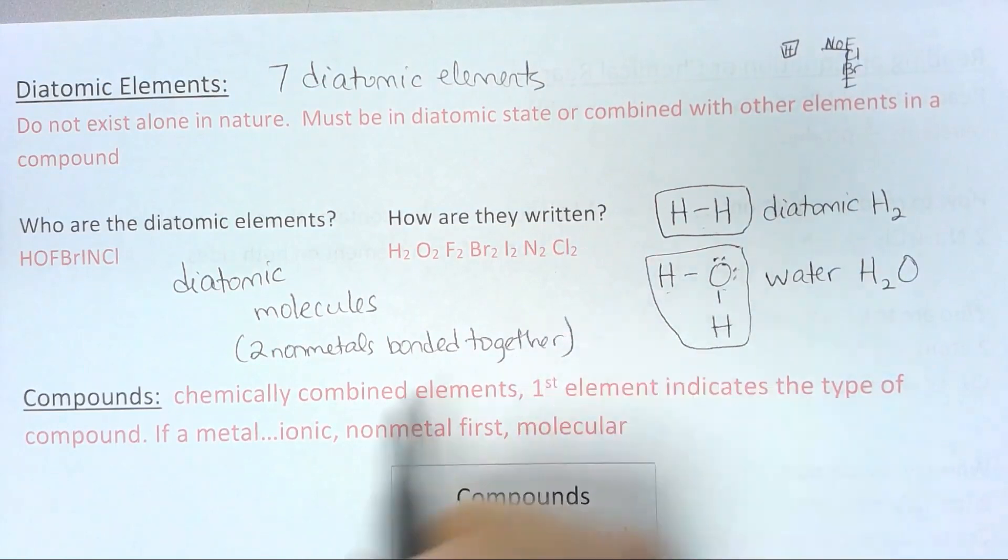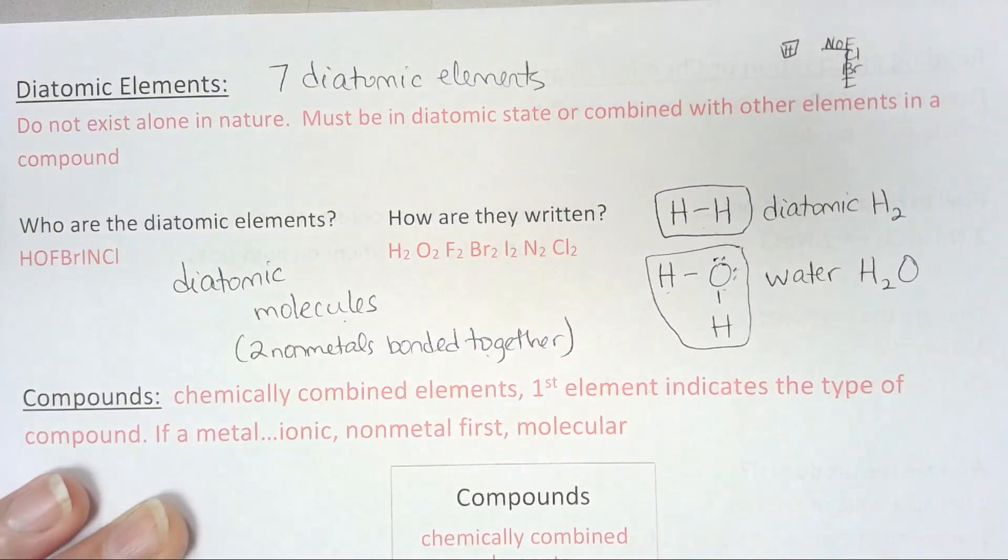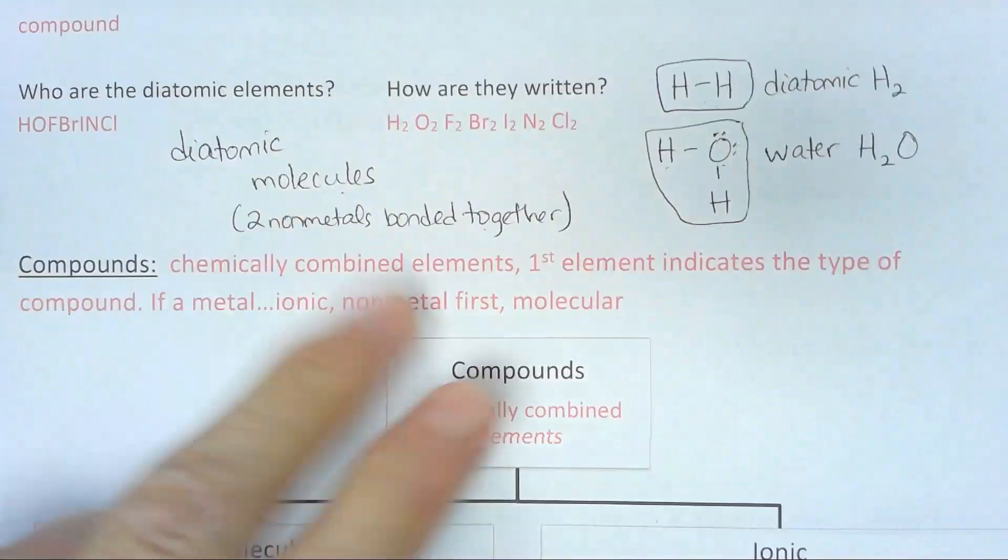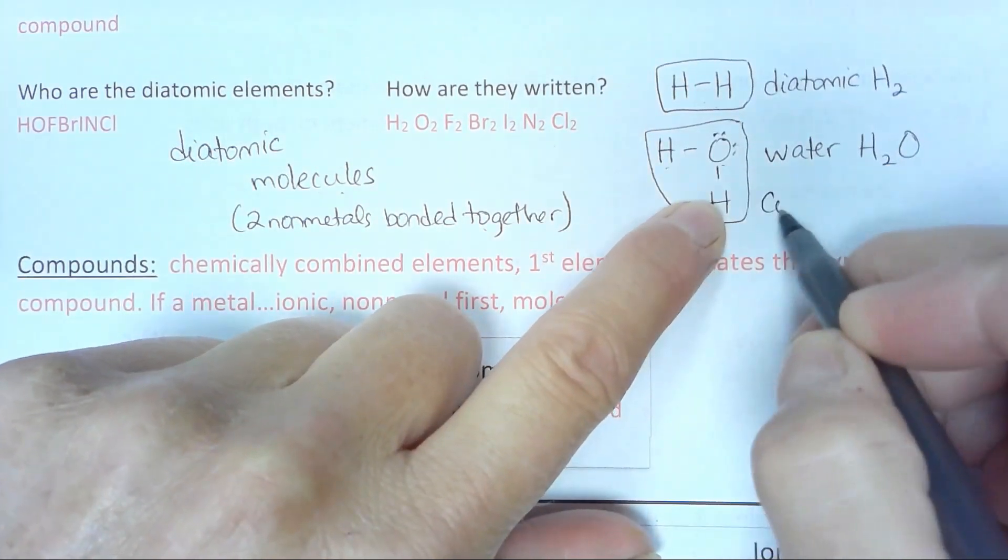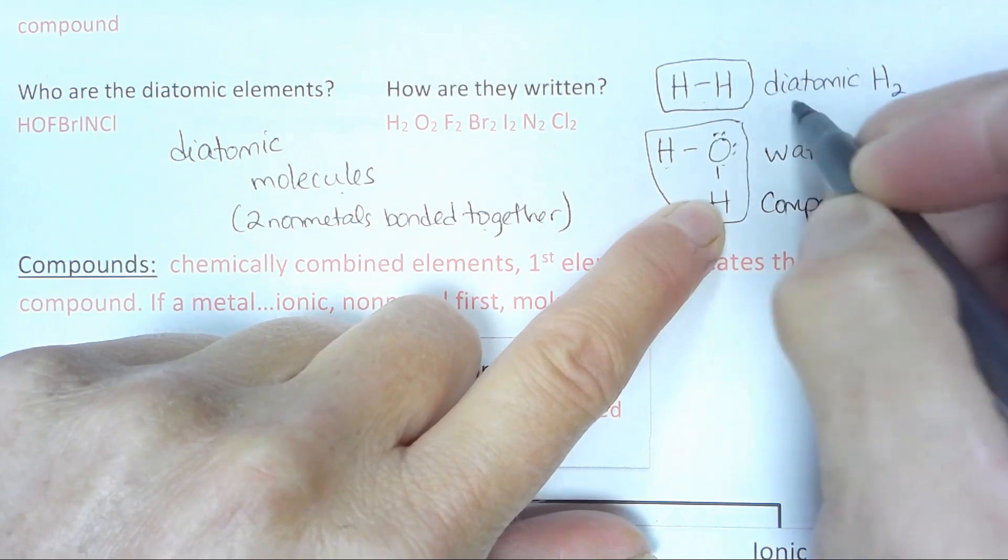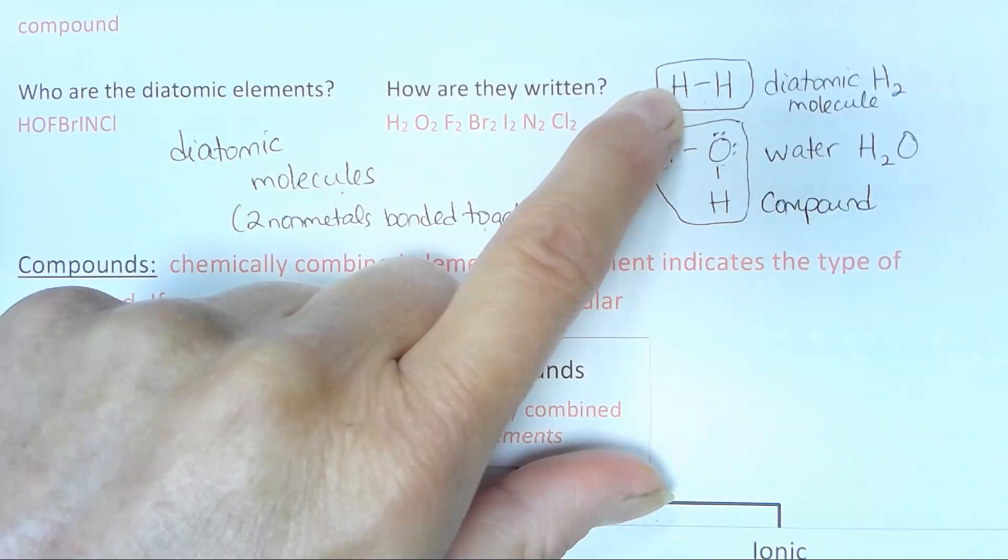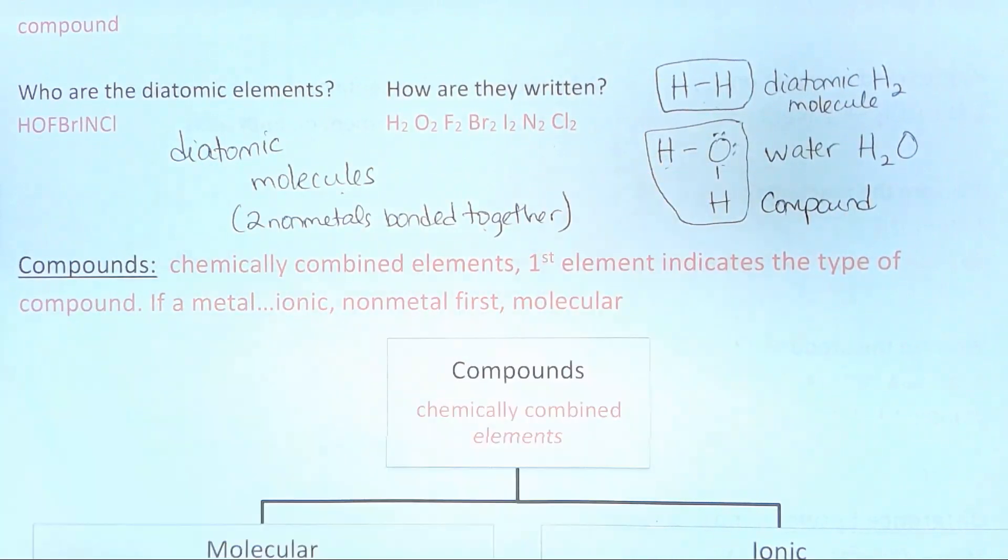These are sometimes called diatomic molecules, diatomic elements, but they are molecules because they are two non-metals bonded together. And when we have non-metals bonded together, we call them molecules, which gets us to our next flow chart.